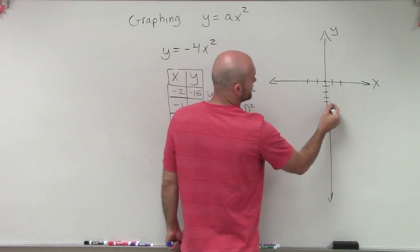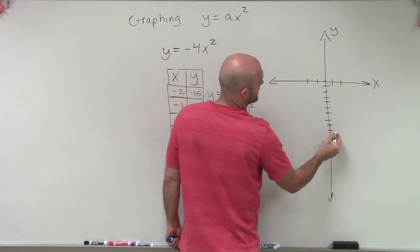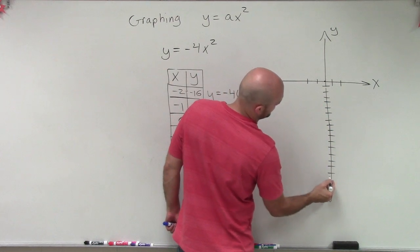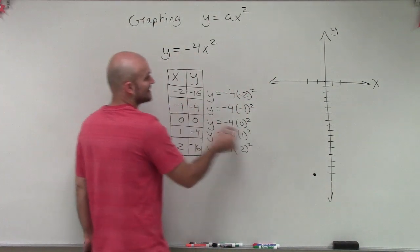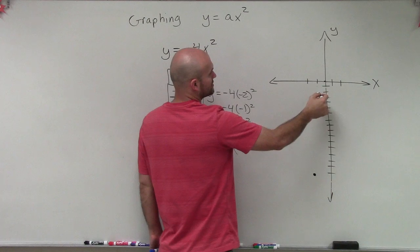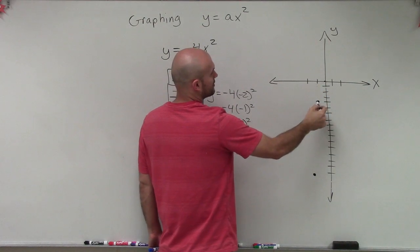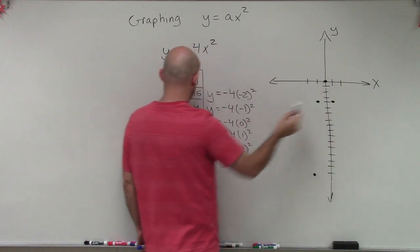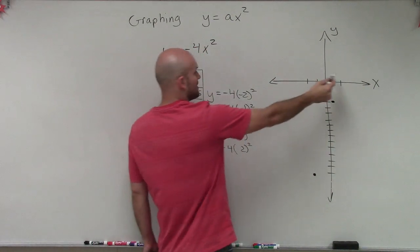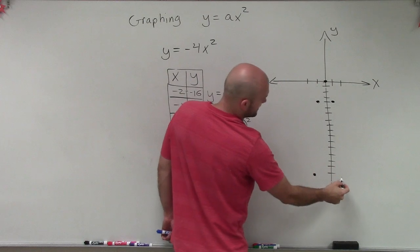1, 2, 3, 4, 5, 6, 7, 8, 9, 10, 11, 12, 13, 14, 15, 16. Then I go negative 1, down negative 4. So negative 1, 1, 2, 3, 4. Then 0, 0, over 1. So positive 1, negative 4, and then positive 2, negative 16 again.